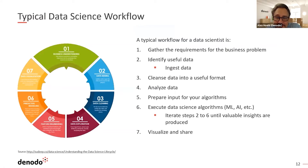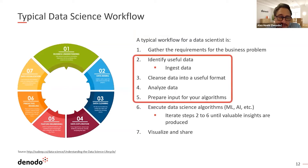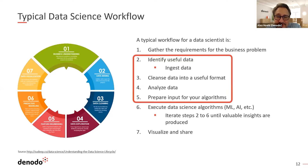Let's talk about the data problem typically seen in data science projects. A good part of the challenges are around data. If you look at the seven steps of a typical data science project, points two through five — identifying useful data, ingesting it, cleansing it, analyzing it, and preparing it for algorithm inputs — make up a big chunk of the work.